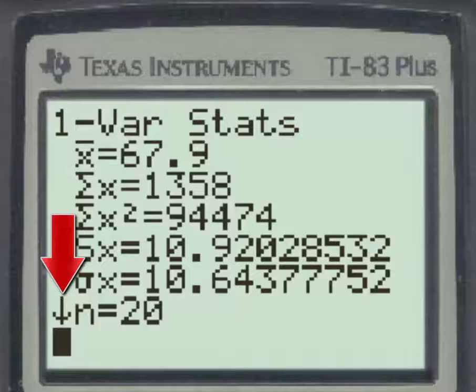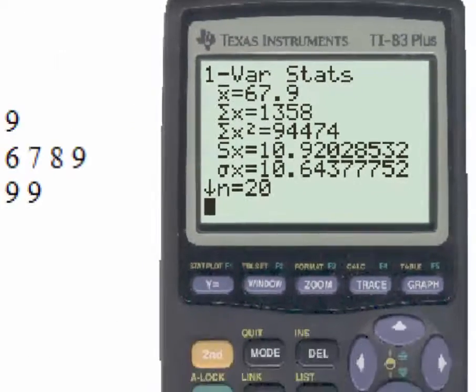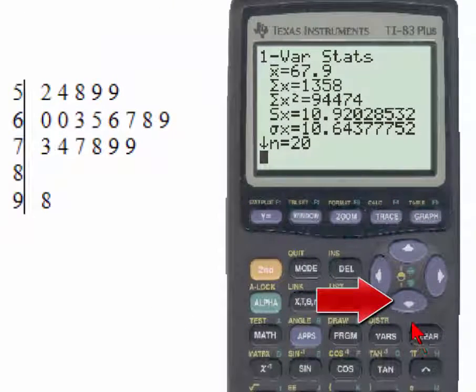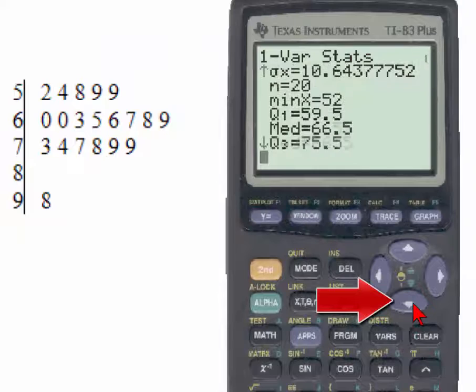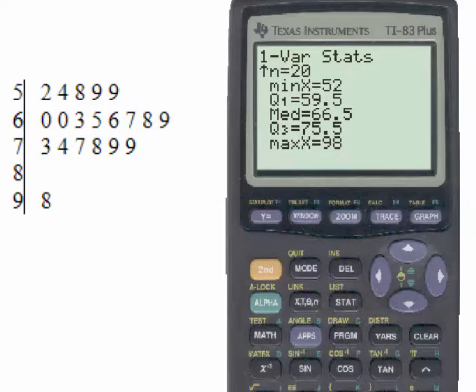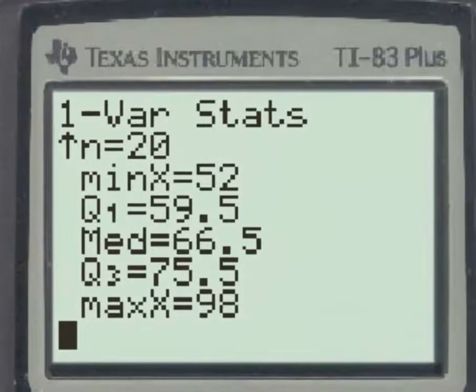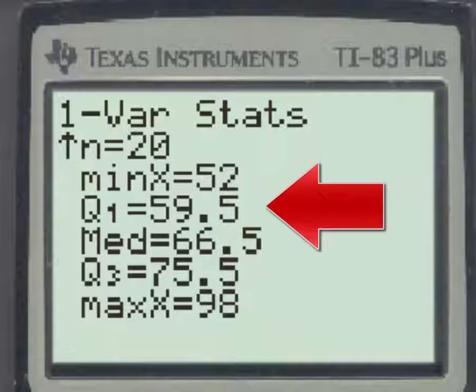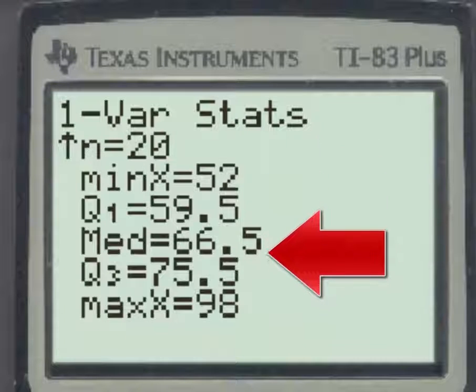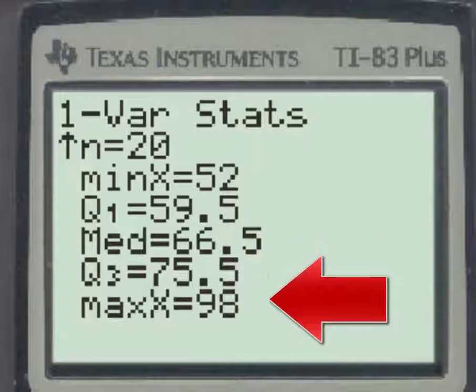The down arrow tells us that if we use the blue down arrow on the calculator, we have more information available. As you scroll to the bottom, you see that the five number summary is given: minimum, Q1, median, Q3, and maximum.